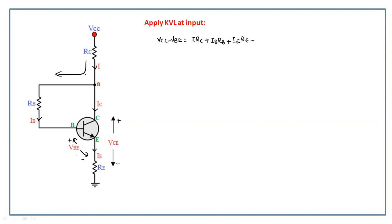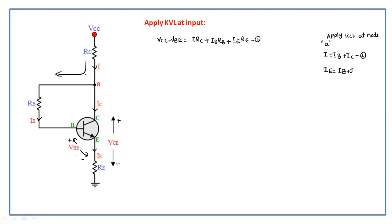Now if we apply KCL at node A, the entering current is I and the leaving currents are IB and IC, so I = IB + IC. Assume this is equation number two. We also know that emitter current IE equals base current plus collector current, IE = IB + IC. Assume this is equation number three.